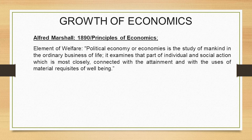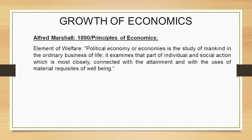Then Marshall says this subject examines the action of the individual and the action of the society, which is closely connected with the attainment — that is, how to get these resources — and with the uses of material requisites of well-being. The material requisites are land, labor, and capital. The ultimate purpose is well-being, because all these resources are demanded for well-being. This is the definition of Marshall.